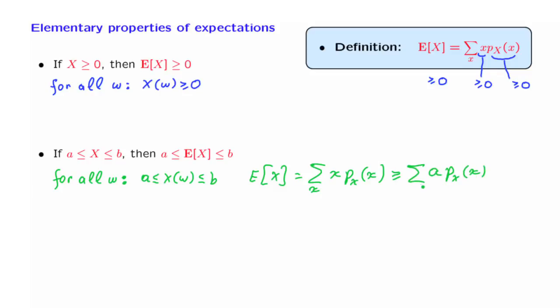Then, we pull a factor of a outside the summation, and finally, we recall that the sum of a PMF over all possible values of little x is equal to 1.